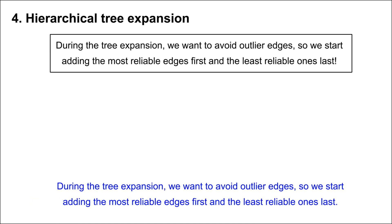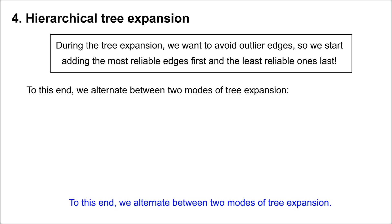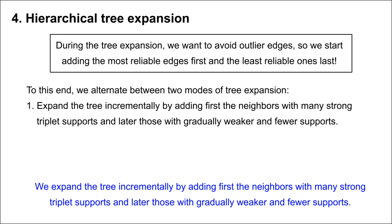During the tree expansion, we want to avoid outlier edges, so we start adding the most reliable edges first and the least reliable ones last. To this end, we alternate between two modes of tree expansion. The first mode is the expansion based on the triplet support. We expand the tree incrementally by adding first the neighbors with many strong triplet supports, and later those with gradually weaker and fewer supports.